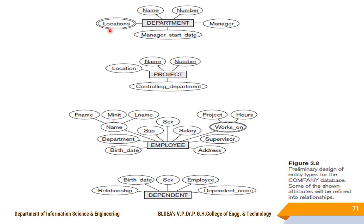The double oval indicates that attribute holds multiple values — it is a multi-valued attribute. Location is a multi-valued attribute. Similarly, PROJECT is also an entity type with Name and Number as key attributes, and Location and Controlling Department as attribute names. Employee is also an entity type, with an example of a composite attribute: Name is further divided into FName, Middle Initial, and LName.